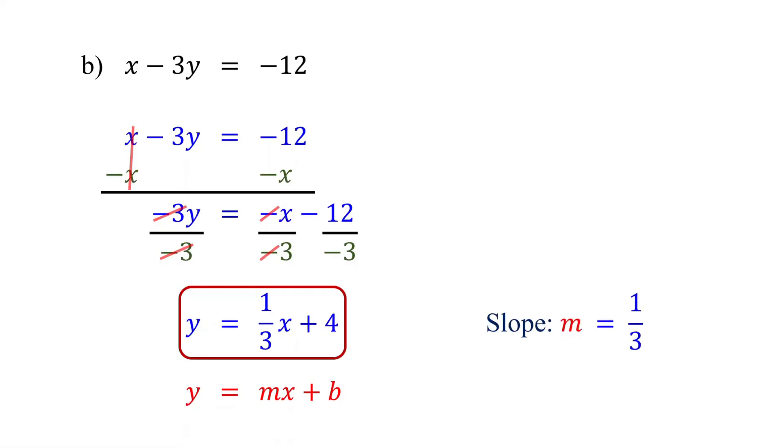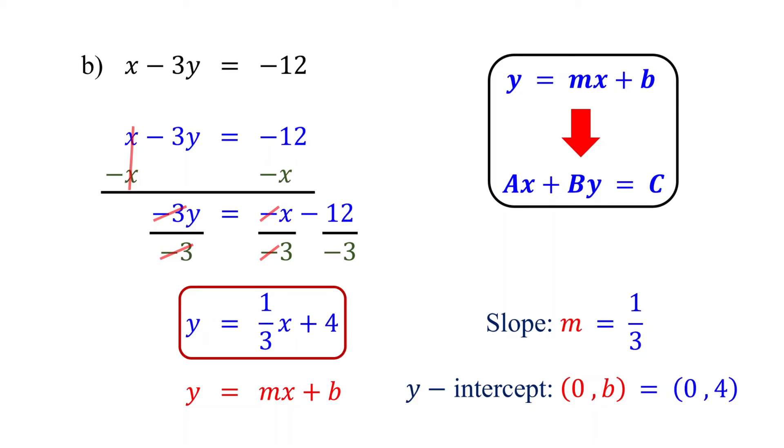We can see that the slope is 1 over 3, and the y-intercept is 0, 4. To convert slope-intercept form back to standard form, check the link in the description below.